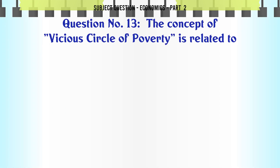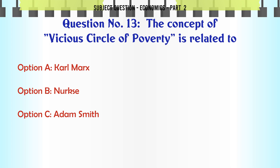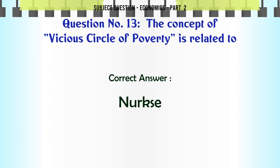The concept of Vicious Circle of Poverty is related to: A. Karl Marx. B. Nurkse. C. Adam Smith. D. None of the above. The correct answer is: Nurkse.